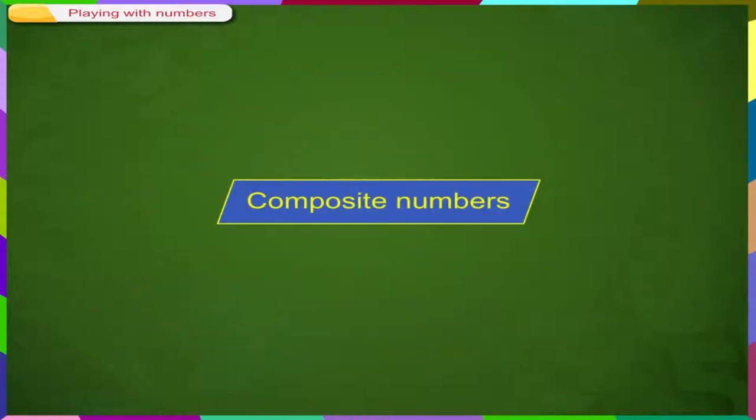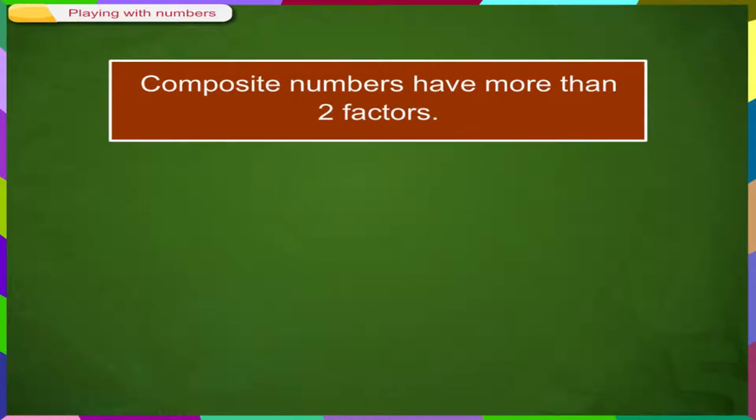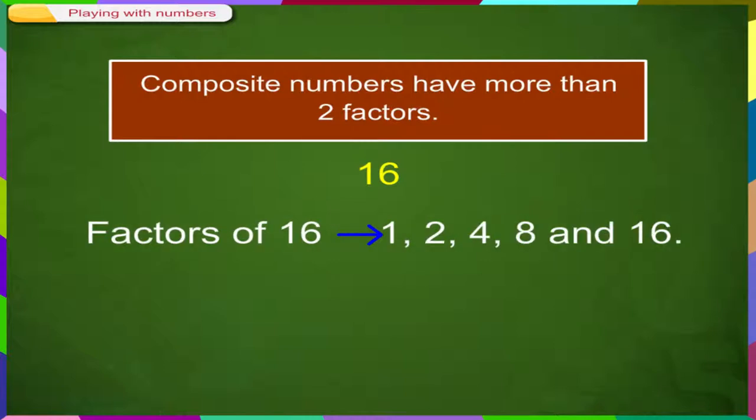Composite Numbers. Composite numbers have more than 2 factors. 16 is an example of a composite number. The factors of 16 are 1, 2, 4, 8 and 16. All of these numbers divide into 16 evenly.